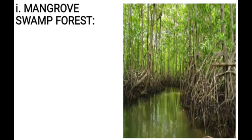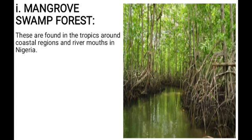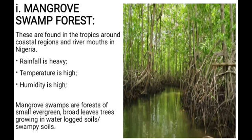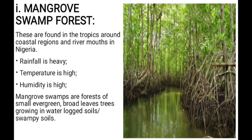Let's look at the first type of biome, which is mangrove swamp forest. Mangrove swamp forests are found in the tropics around the coastal regions and river mouths in Nigeria. Rainfall here is heavy, temperature is high, humidity is also high, and the mangrove swamps are forests of small evergreen broadleaf trees growing in waterlogged or swampy soil.